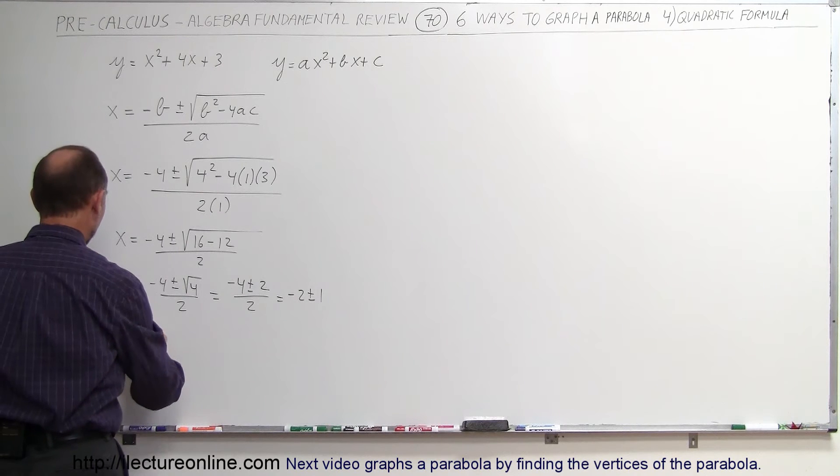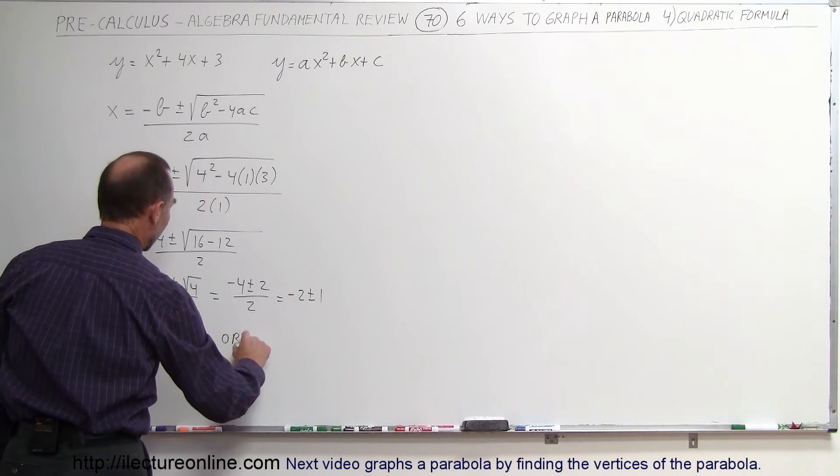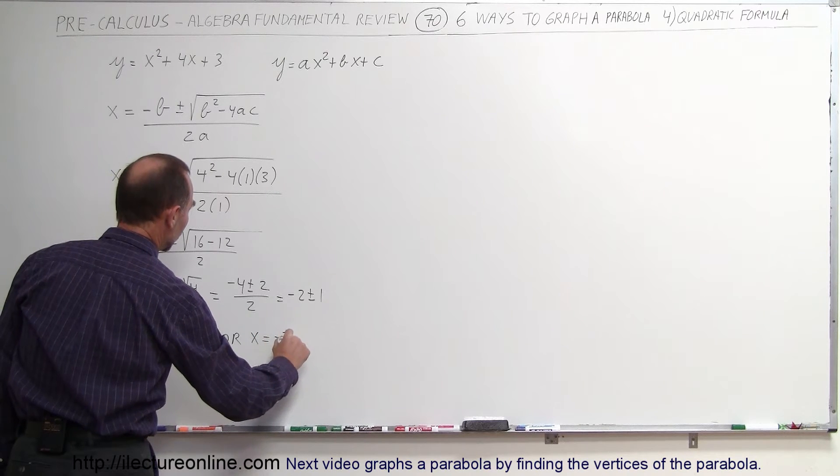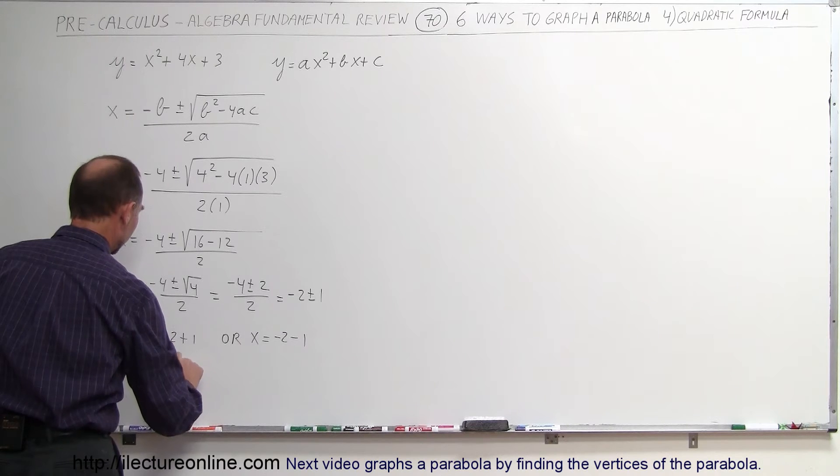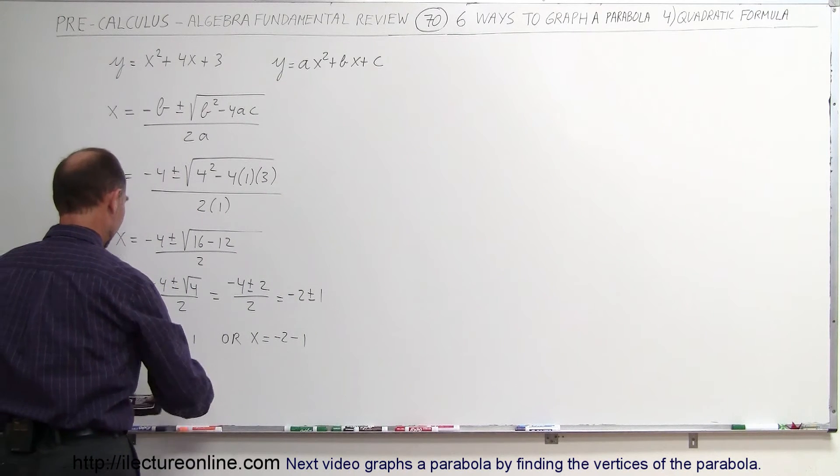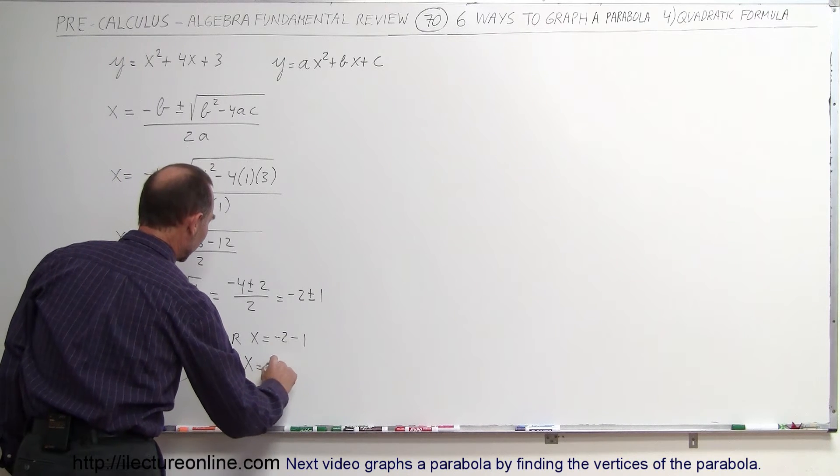So now that means that we have two possible solutions. So either x is equal to minus 2 plus 1, or x is equal to minus 2 minus 1. So in the first case, x equals minus 1, and in the second case, x equals minus 3.